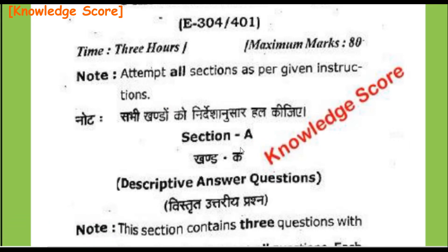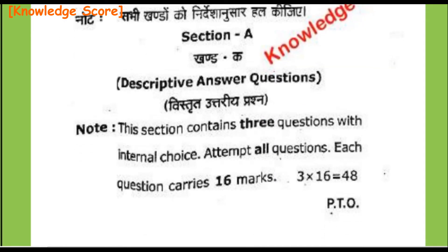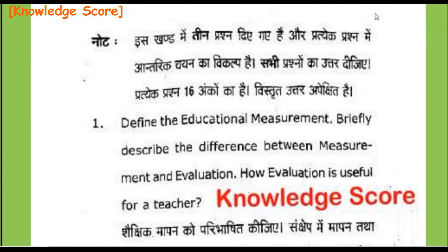Section A — Khand Ka — is descriptive answer questions (Bistrit utriya prashna). This section contains 3 questions with internal choice. Attempt all questions. Each question carries 16 marks. 3 into 16 equals 48, so Section A is of 48 marks. Prateek prashna mein antrik chayne ka bikalp hai. Sabhi prashna ka uttar dijiye. Prateek prashna 16 ank ka hai.